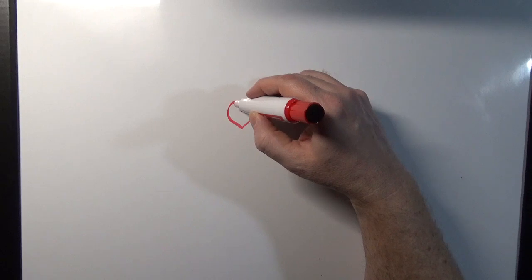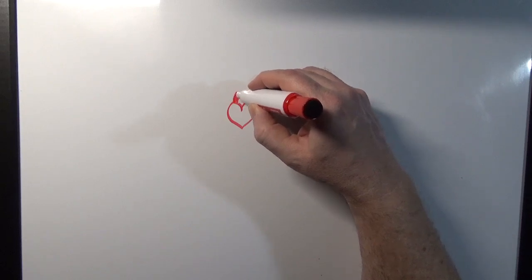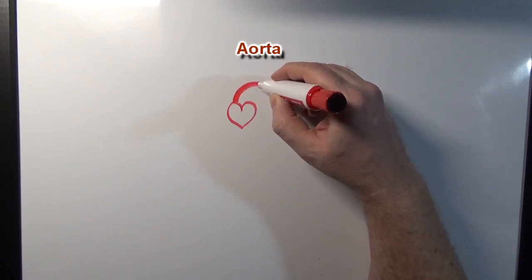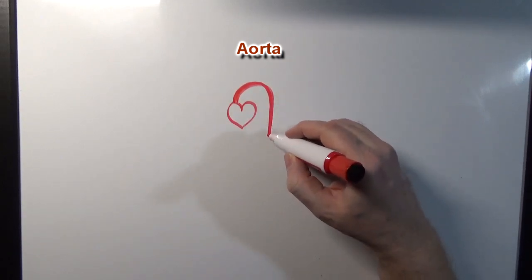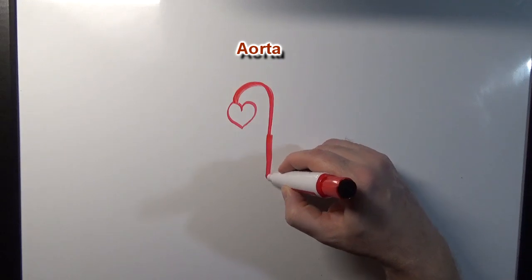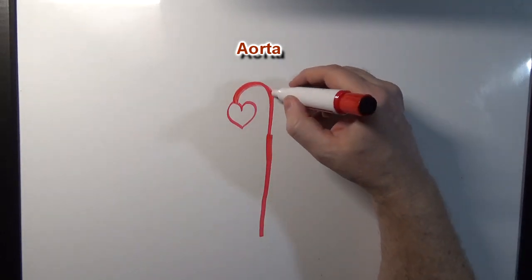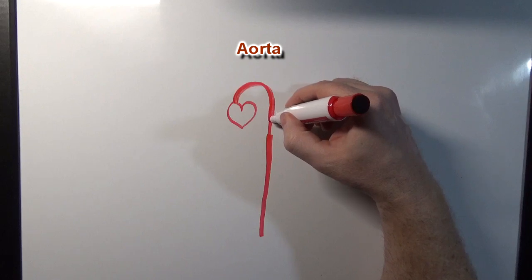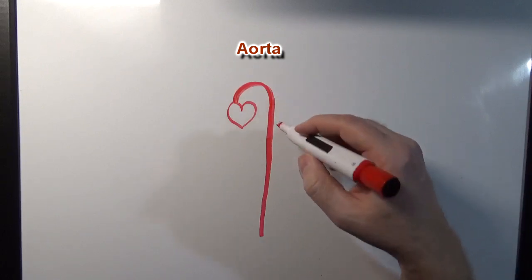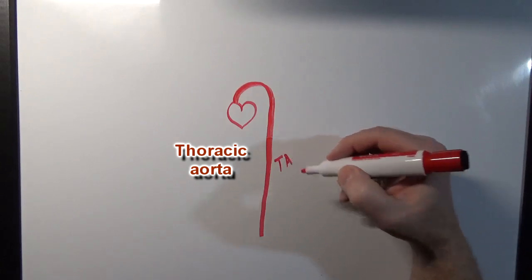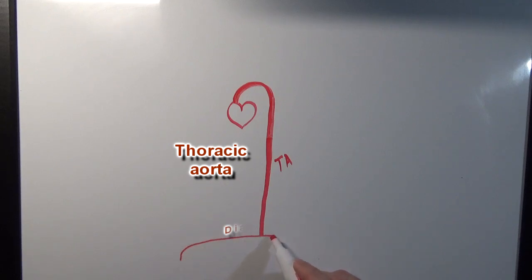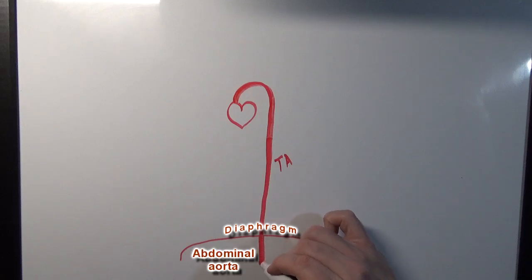Let's start with the main blood vessel coming from the heart, which is going to be the aorta. We're tracing blood through the arteries here to the body. This aorta is going to descend through the thoracic cavity, so we're going to call it the thoracic aorta when it's in the thoracic cavity. And once it passes through the diaphragm, the name is going to change to the abdominal aorta.